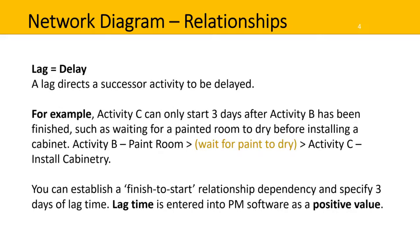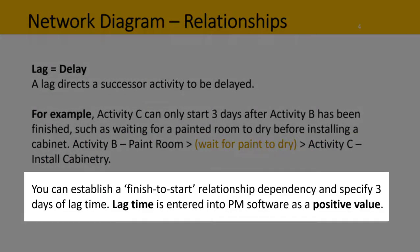A lag means a delay and directs a successor activity to be delayed. For example, activity C can only start three days after activity B has been finished, such as waiting for a painted room to dry before installing a cabinet. There's the relationship activity B paint room, then a lag waiting for the paint to dry, and then we can complete activity C install cabinetry. You can establish a finish-to-start relationship dependency and specify three days of lag time. Lag time is entered into project management software as a positive value.